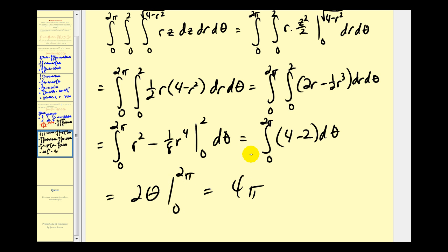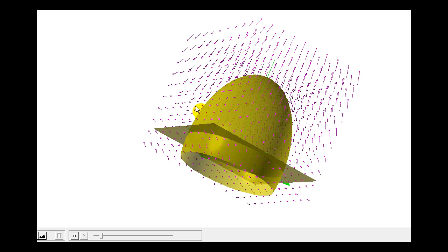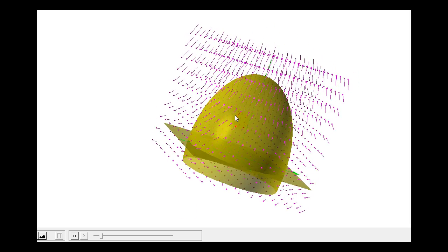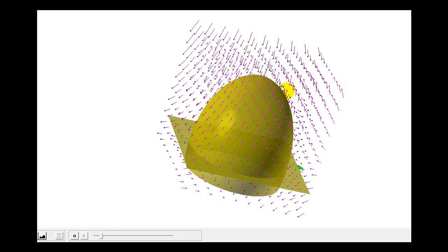Looks like we have four pi for our flux. So we have a positive value, which means the total divergence of the vector field in this solid region is outward, as well as the flow across the surface.